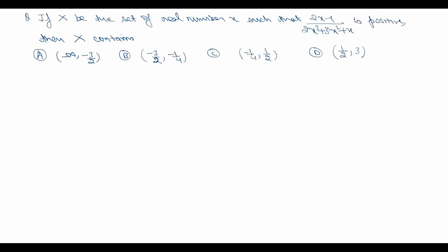Now it's a multiple option correct question, so more than one option may be correct. Basically it's a rational inequality: (2x - 1)/(2x³ + 3x² + x) should be greater than zero. So I need to solve this inequality.